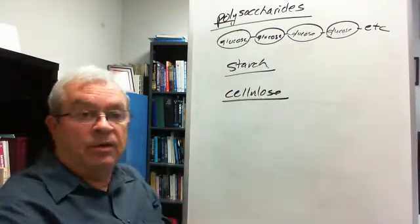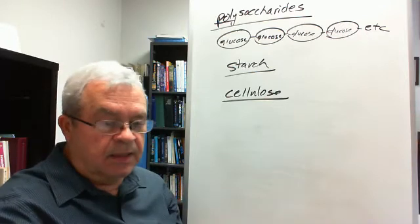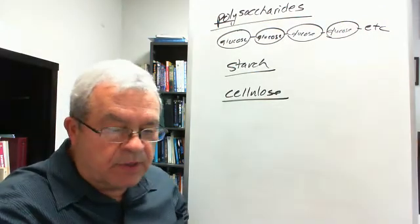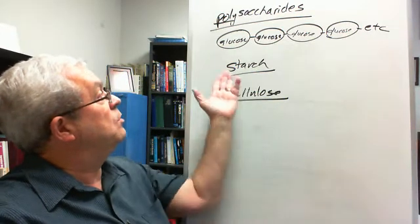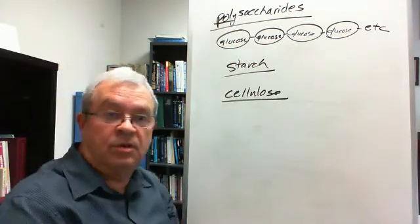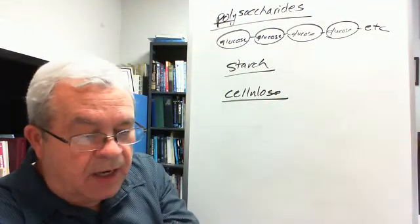So what's the subunit of this polysaccharide? Well, the subunit of both of these is glucose—glucose joined together in some particular way.